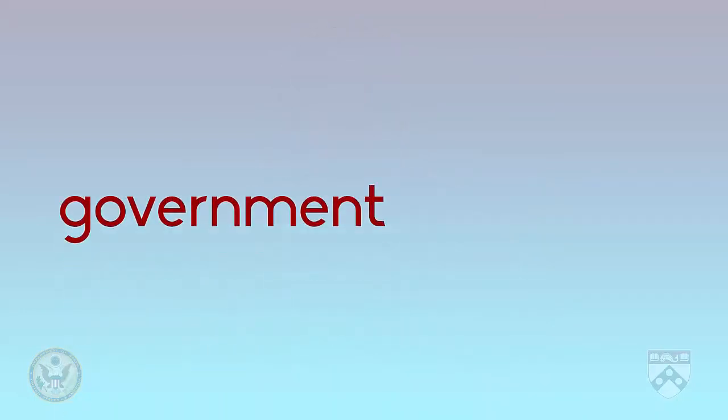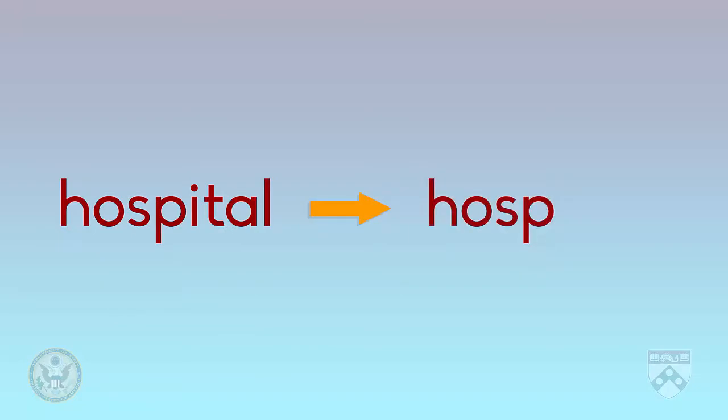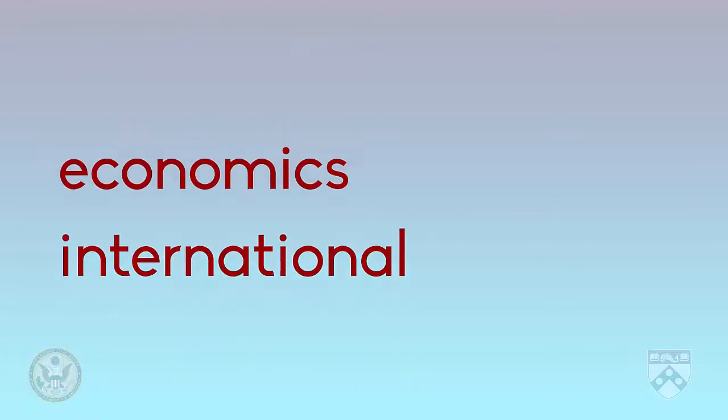The other main way of abbreviating words is to just use the first syllable of the word, or perhaps the first two syllables for long words. So, a word like government is just written down as gov, the first syllable. Or the word hospital is just written down as hosp. For some words, such as economics or international, the first two syllables can be used.